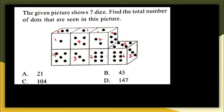Looking at the options, if you add 2+1+5+4+3+1 the answer cannot be 104 — that's not possible. Similarly 147 also cannot be the answer; these two numbers are very big. So the answer has to be either 21 or 43.